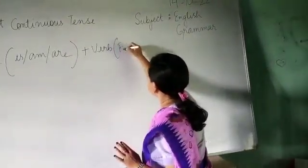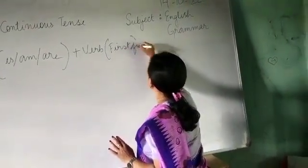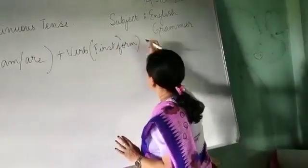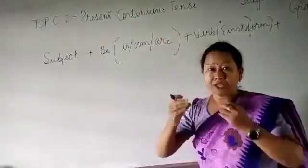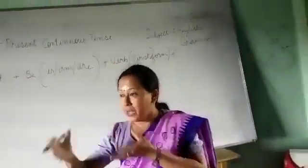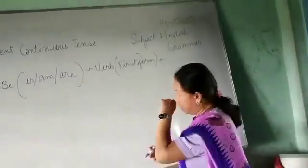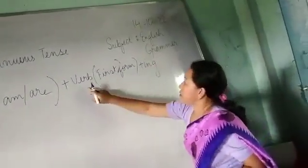So, within this bracket, I will write the first form. First form of the verb. And after this, since continuous means the action is still continuous, it's continuing, the action is still going on. So, in order to indicate that, we will add ing at the end of this verb.